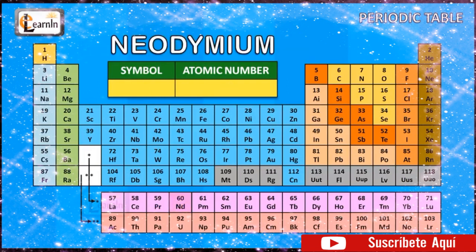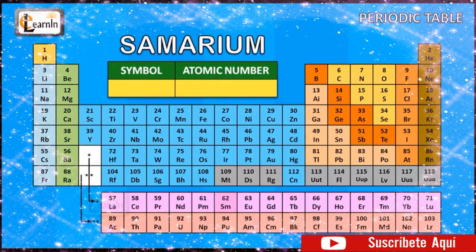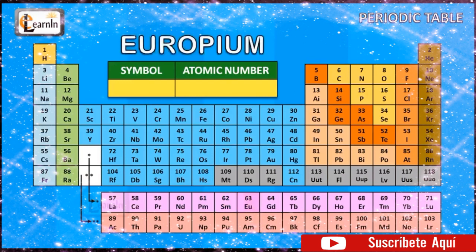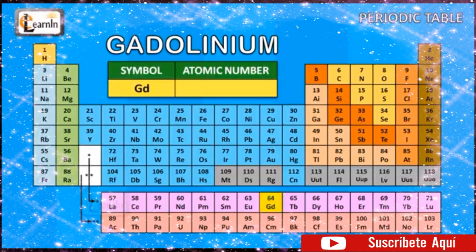The element neodymium is represented as Nd and has an atomic number of 60. The element promethium is represented as Pm and has an atomic number of 61. The element samarium is represented as Sm and has an atomic number of 62. The element europium is represented as Eu and has an atomic number of 63. The element gadolinium is represented as Gd and has an atomic number of 64.